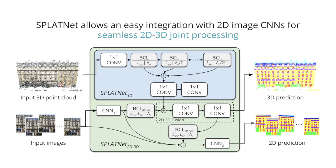Our joint model also outputs 2D predictions from fused 2D-3D features using another 2D image CNN. The whole network is end-to-end trainable. Details about each computational component can be found in our paper.